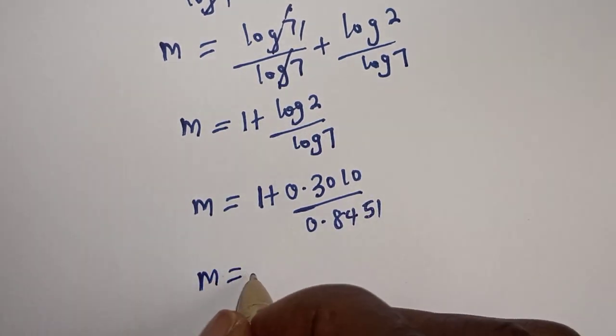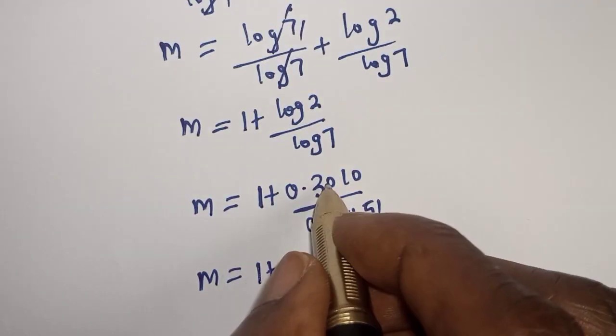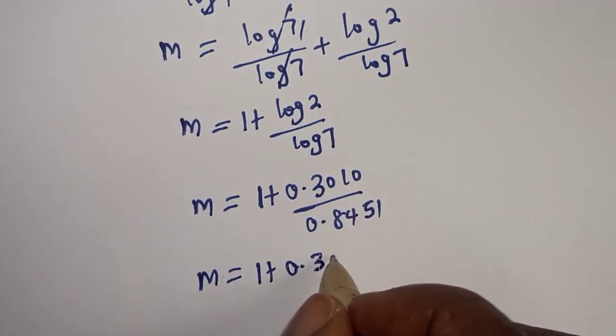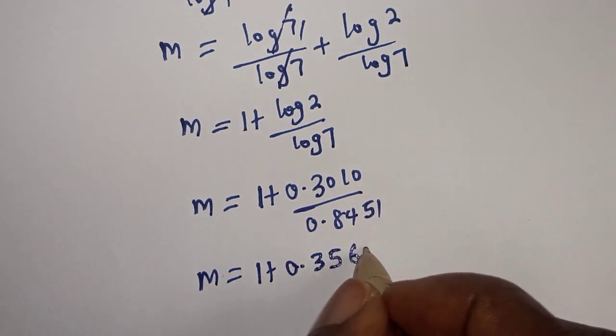m is equal to 1 plus, if you divide this by this, we have 0.3562.